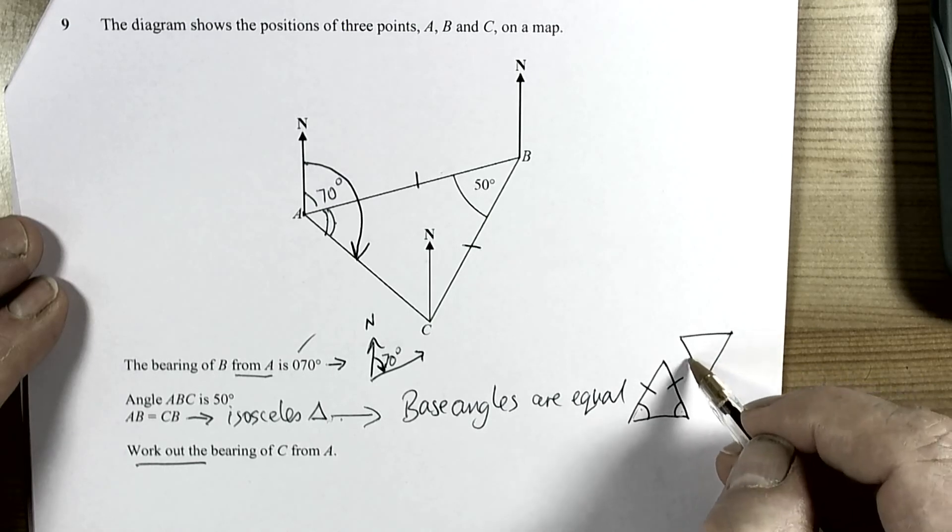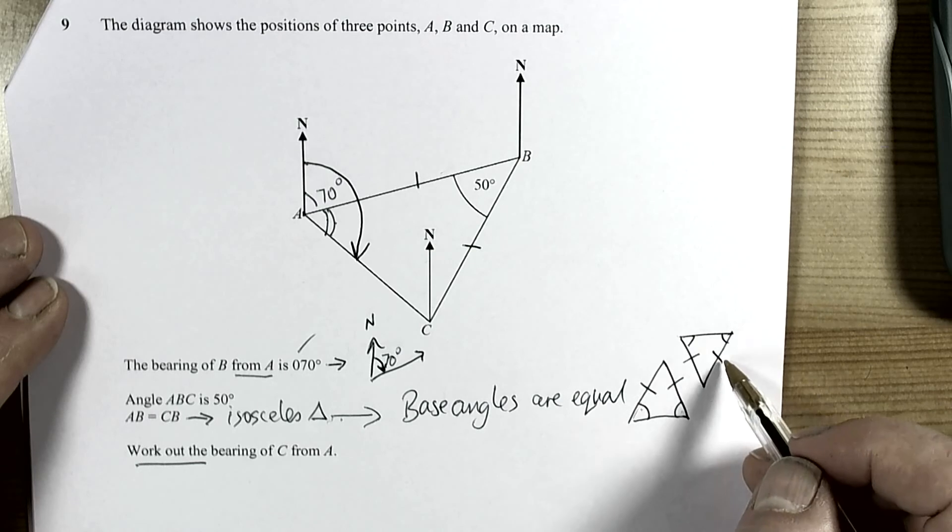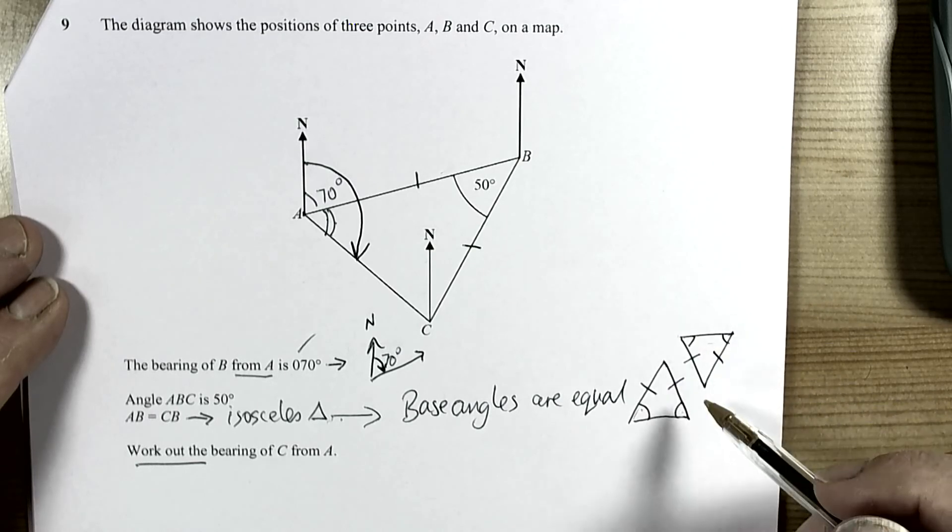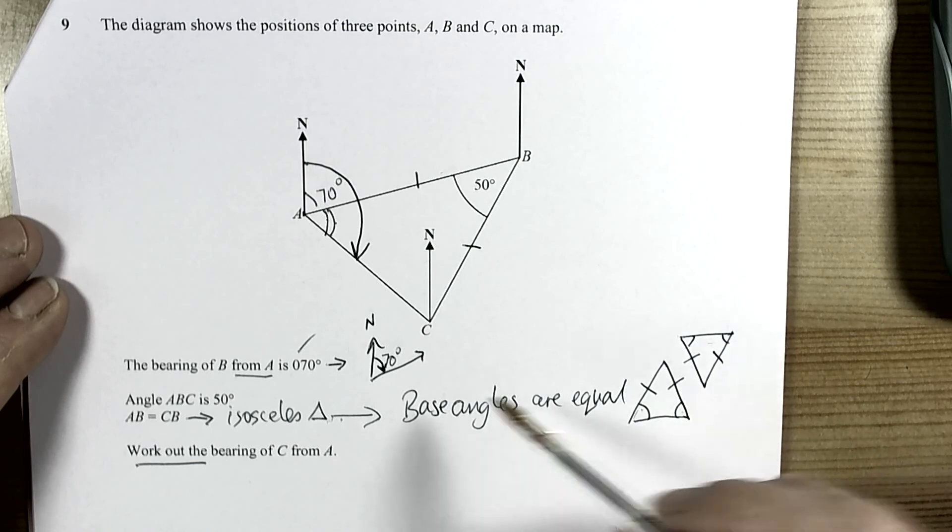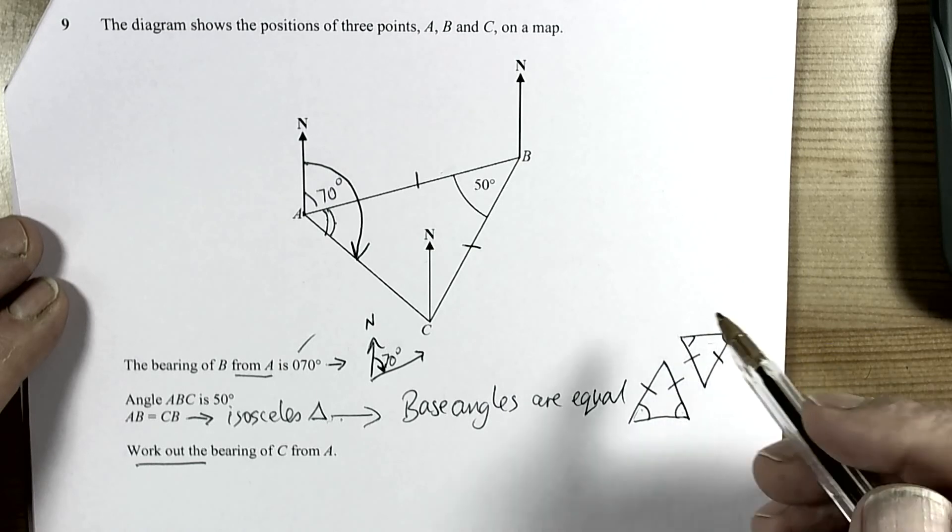So the triangle could have been that way around and then these would be the base angles because they're at the end of the two lines that are the same length. So just remember it's not necessarily the bottom angles or the base tends to mean you feel it's about the bottom. The base is at the end of the two lines.